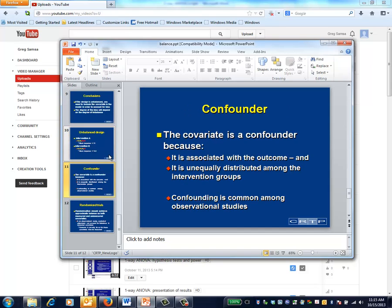Without providing an absolutely precise definition of the confounder, in the example of unbalanced designs, the biomarker is a confounder because A, it is associated with the outcome, the difference between 10 and 20, and B, it is unequally distributed among the groups.